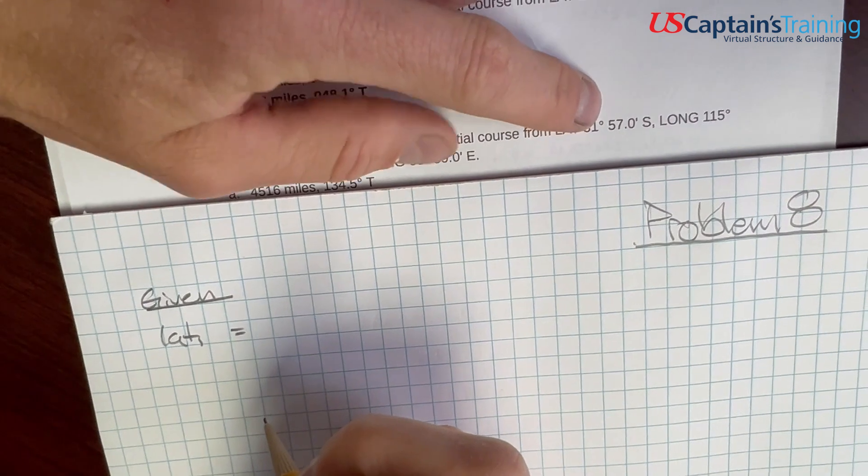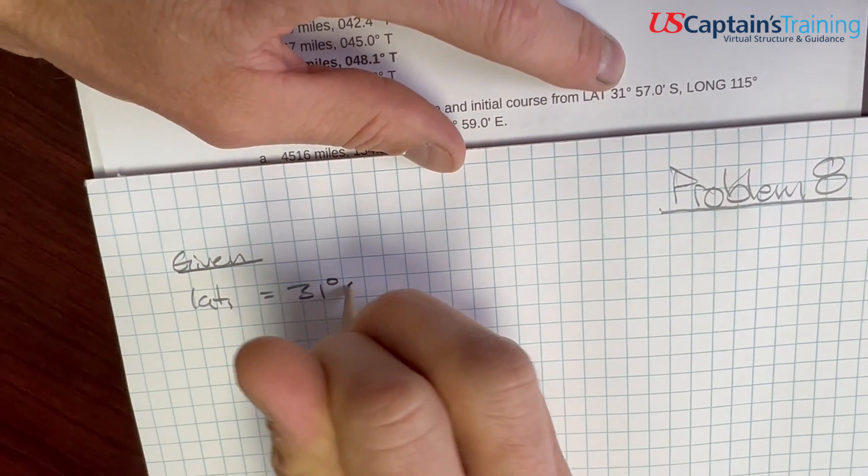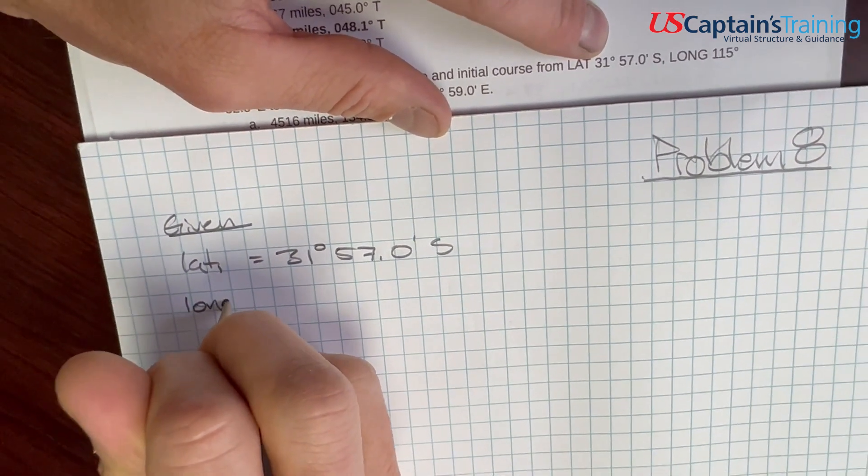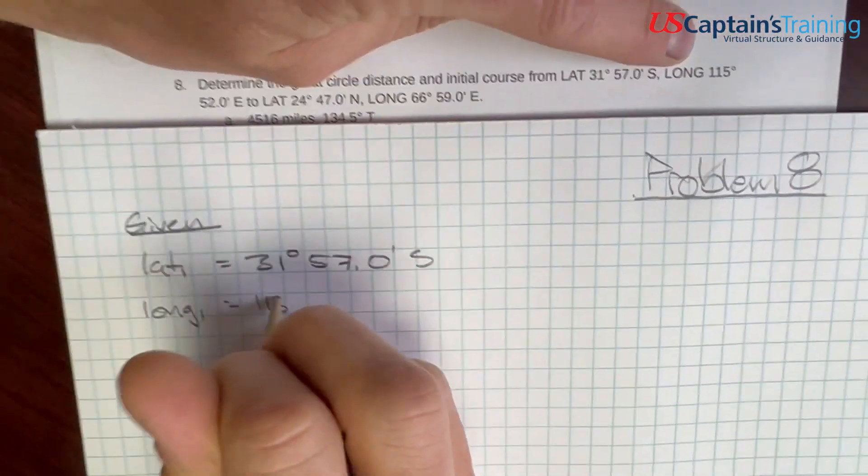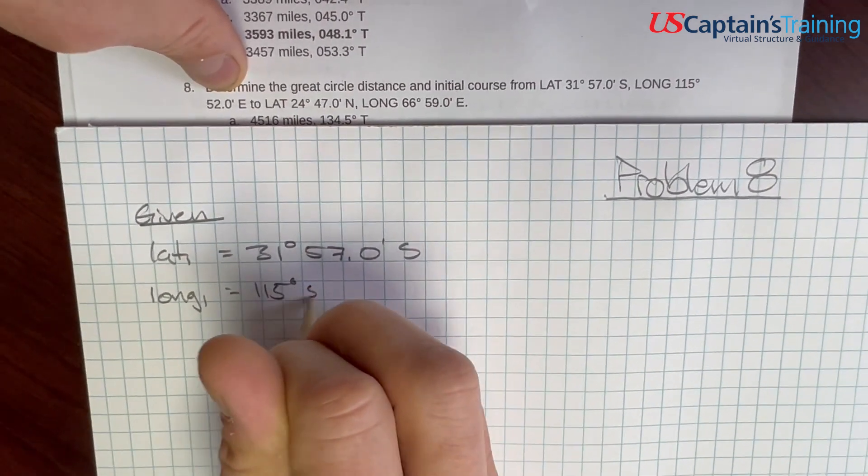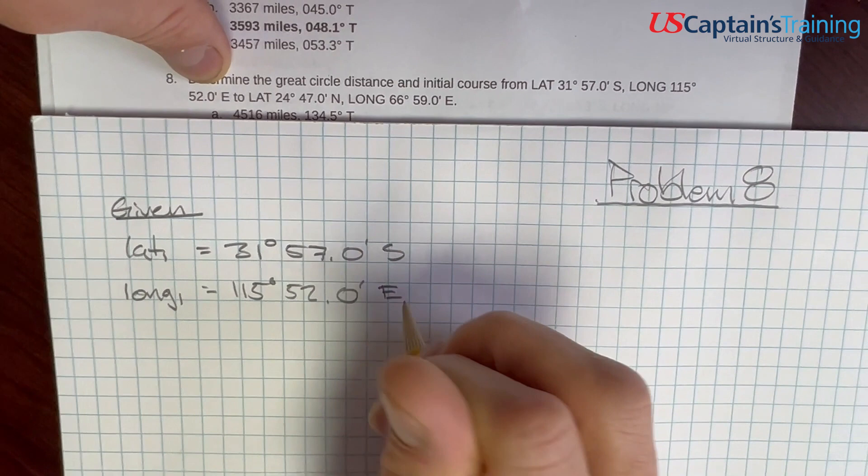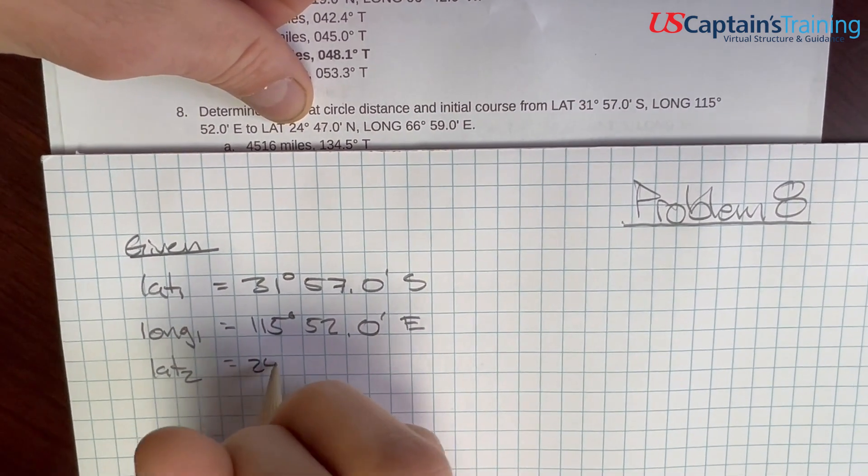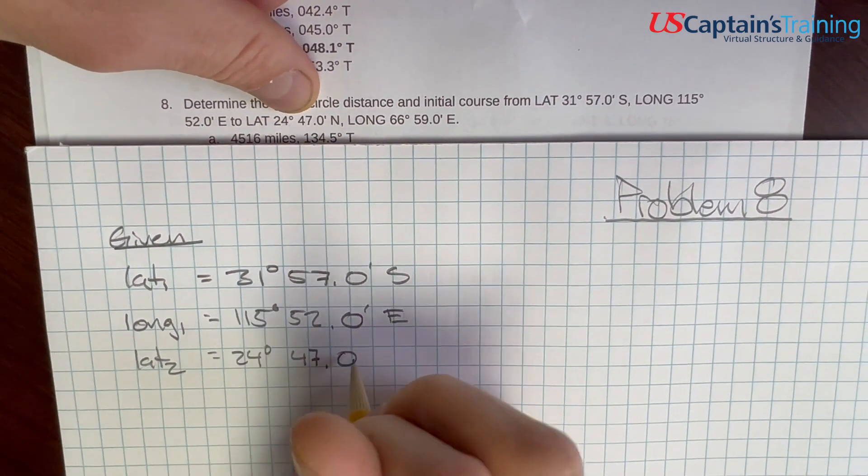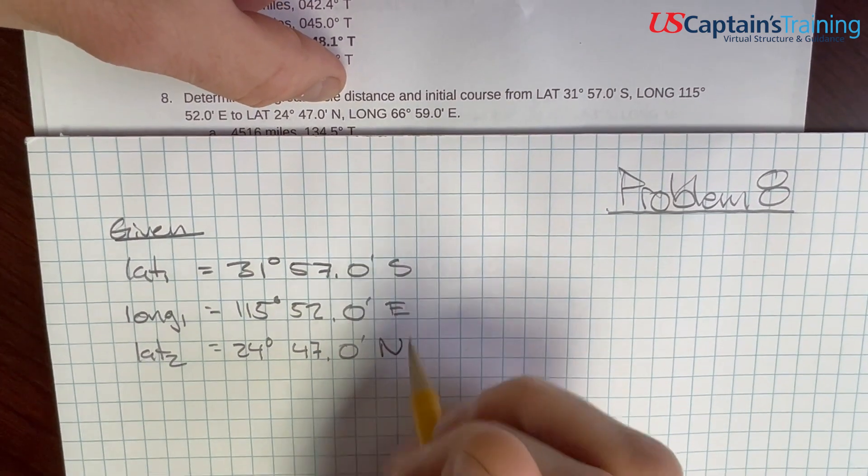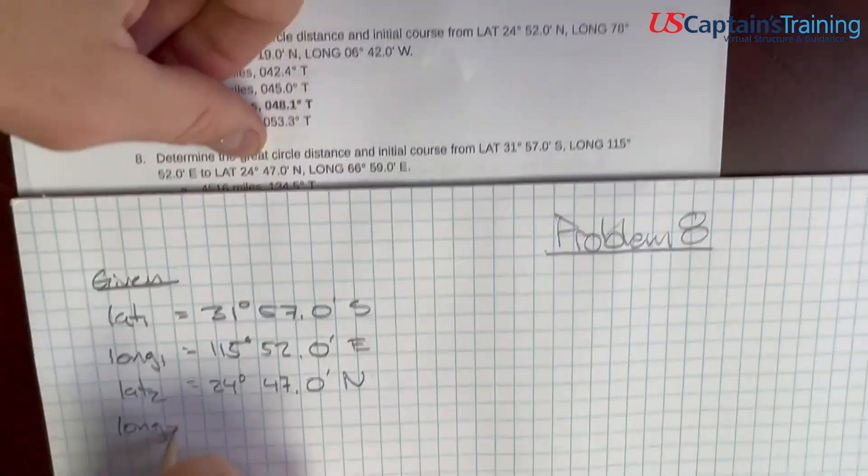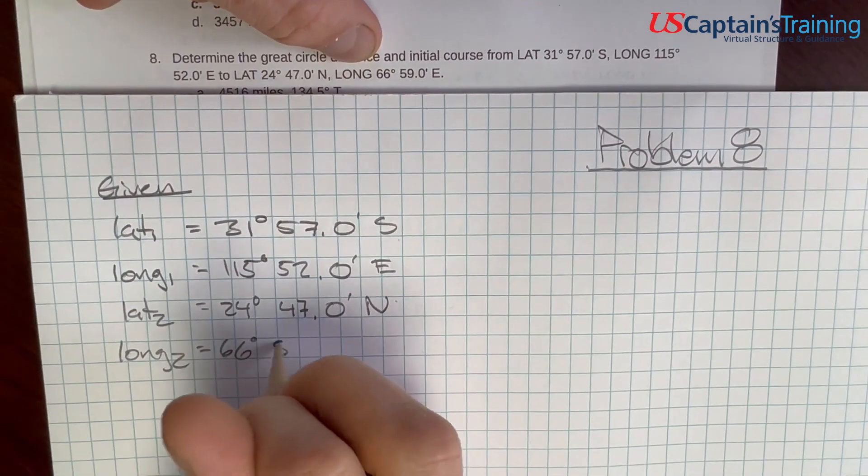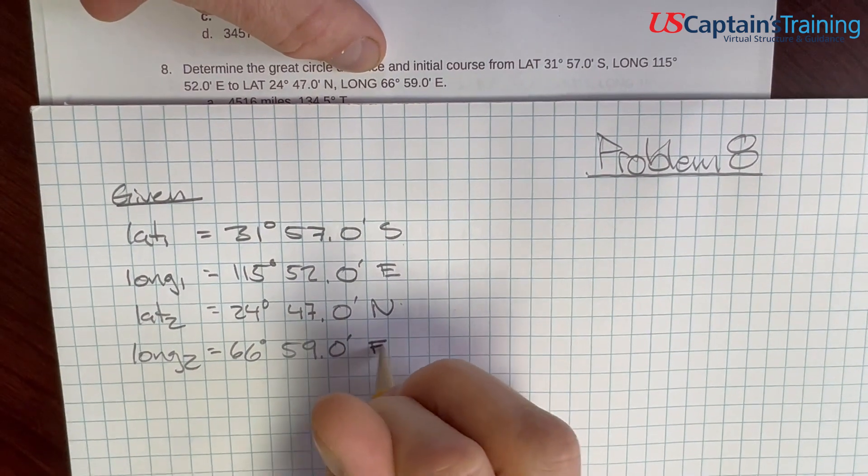which in problem 8 is equal to 31°57.0 minutes south. Longitude 1 is equal to 115°52.0 minutes east. And latitude 2 is equal to 24°47.0 minutes north. We cross the equator, see that? And longitude 2 is equal to 66°59.0 minutes east.